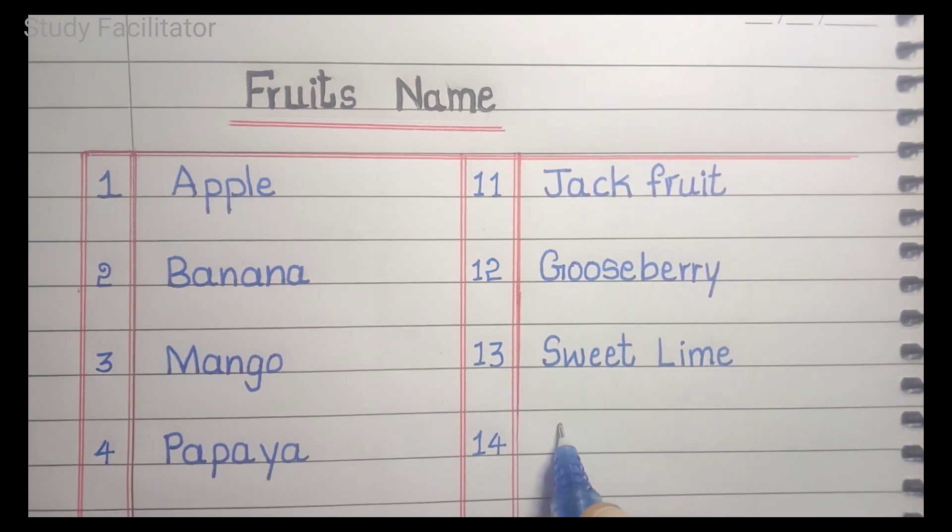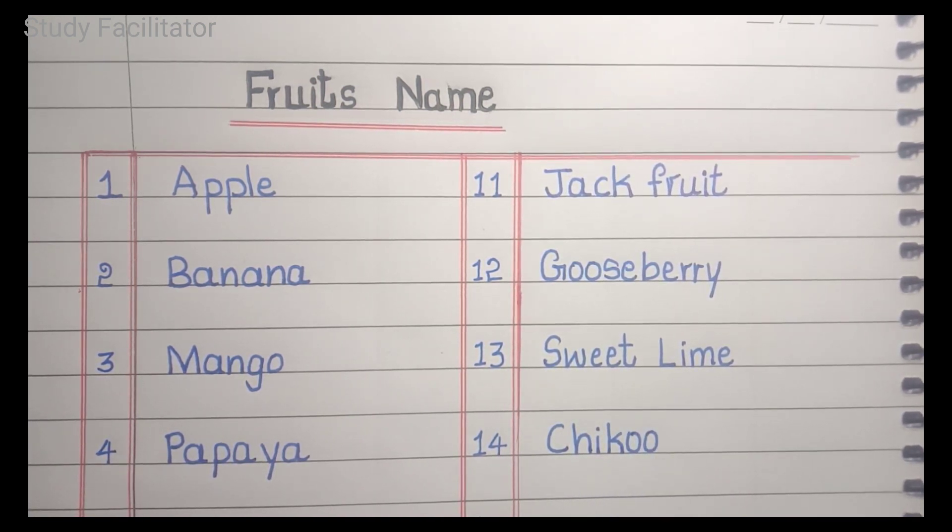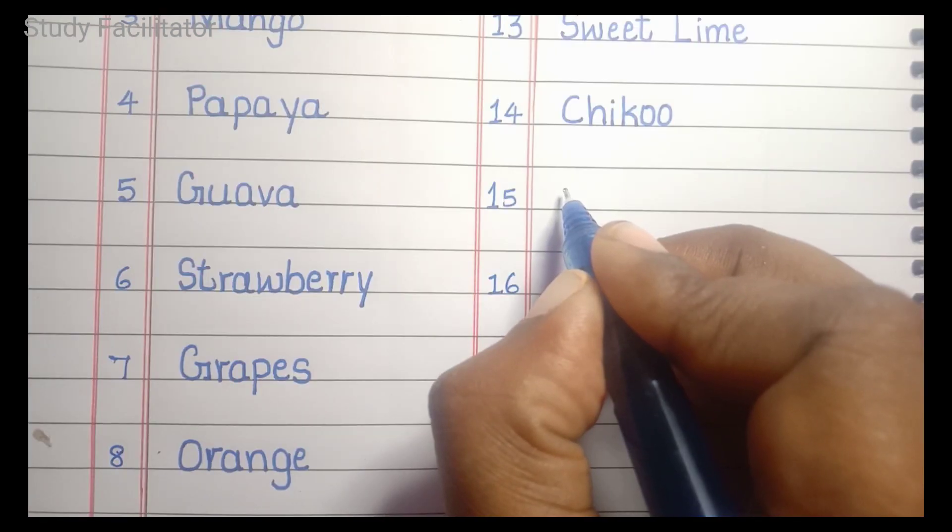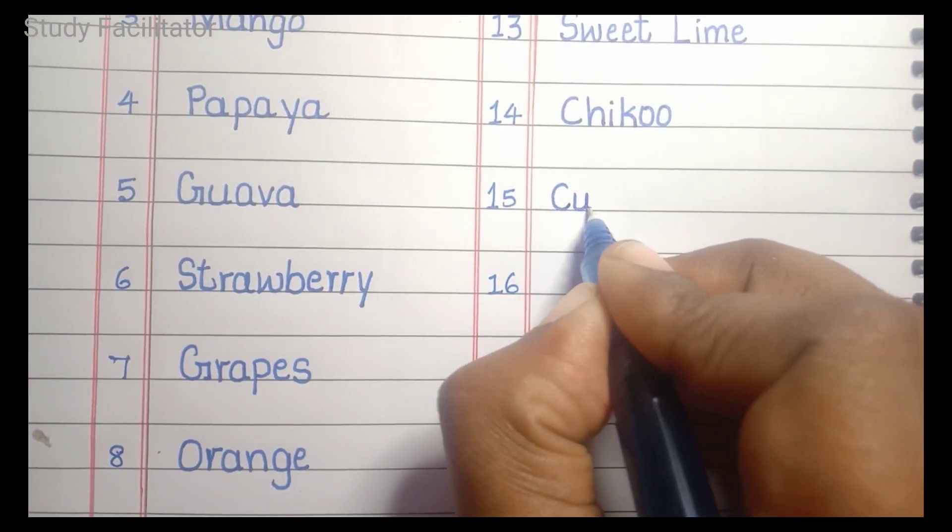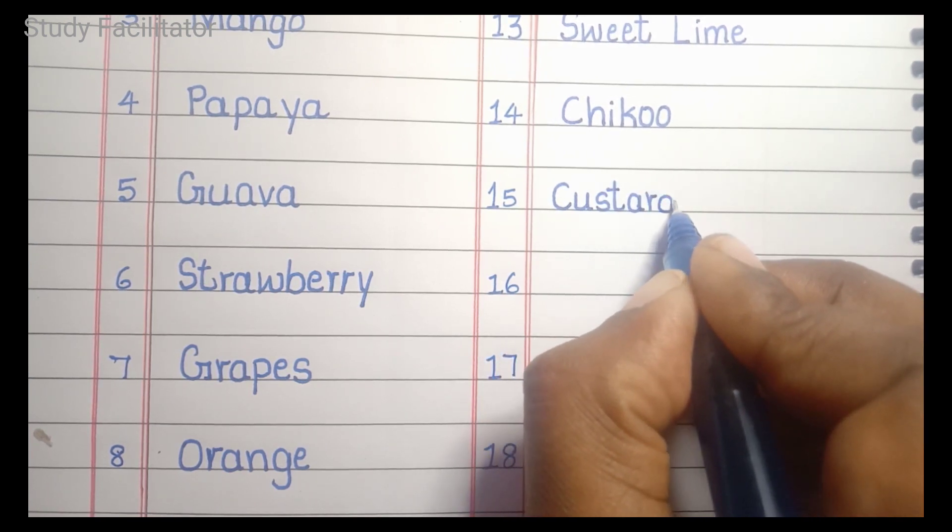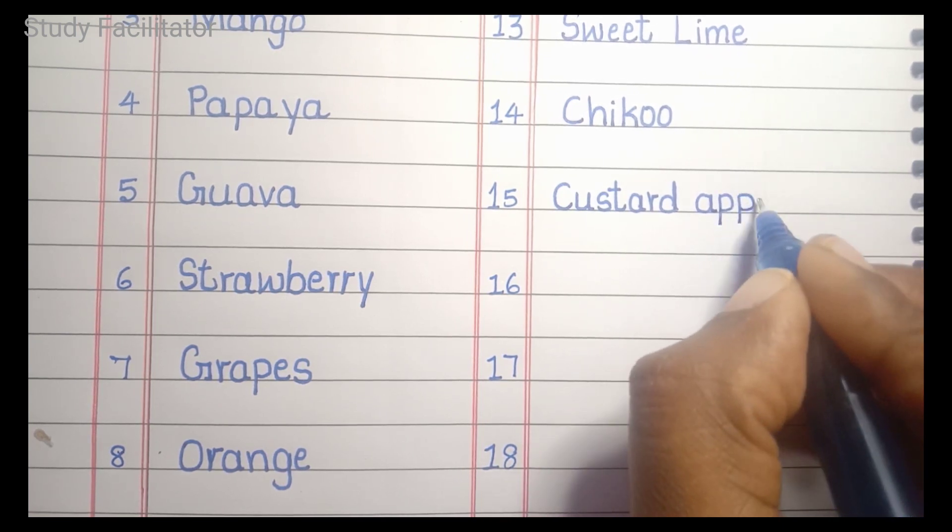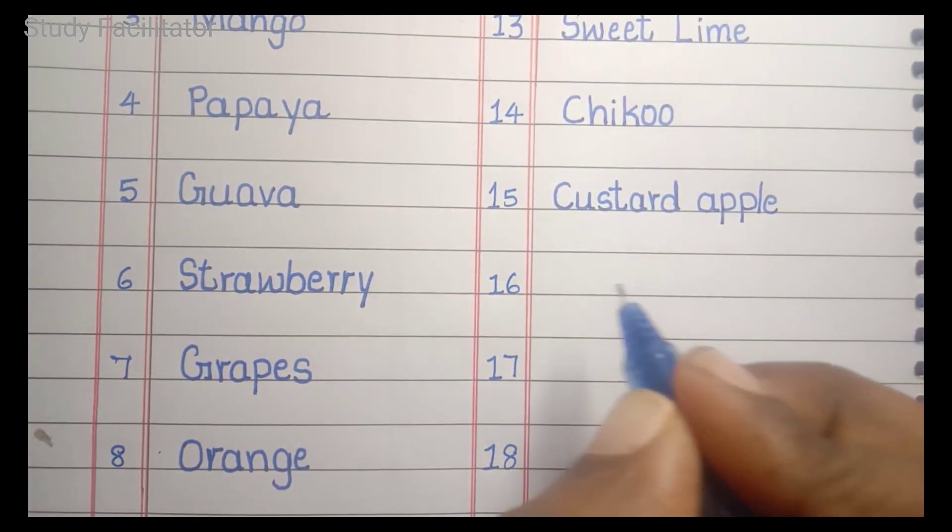Chikku. C, H, I, K, O, O. Chikku. Custard apple. C, U, S, T, A, R, D, A, P, P, L, E. Custard apple.